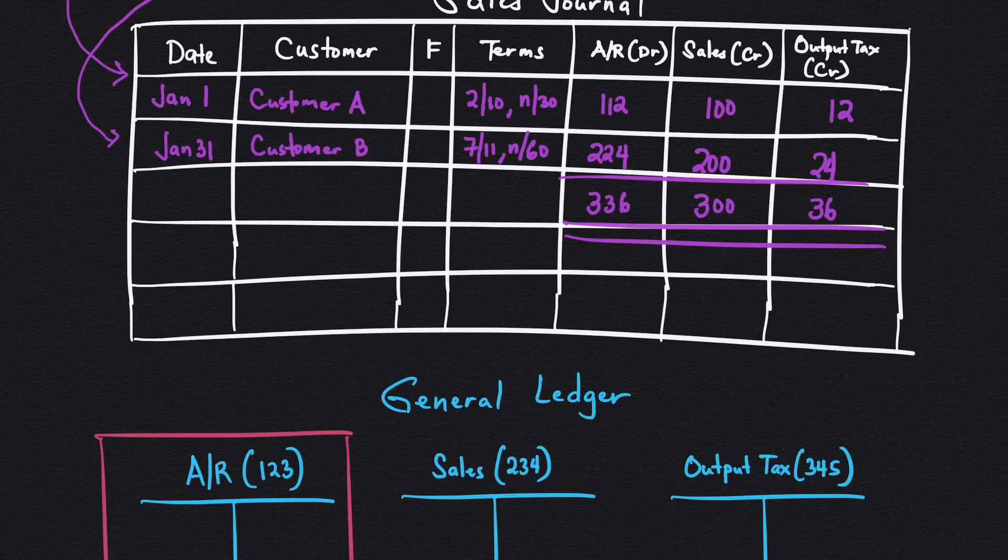For A/R, it's 336 and it's a debit, so I will post it here. A/R 336. After posting, underneath the total, you will write the account number. So for A/R, it's 123 to indicate that the amount 336 was already posted.